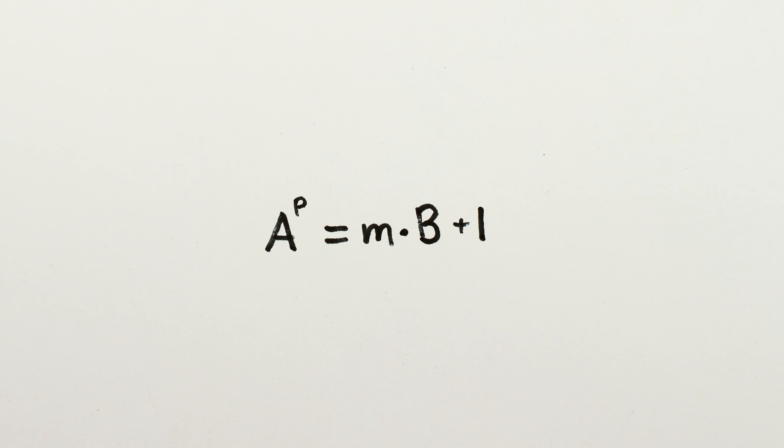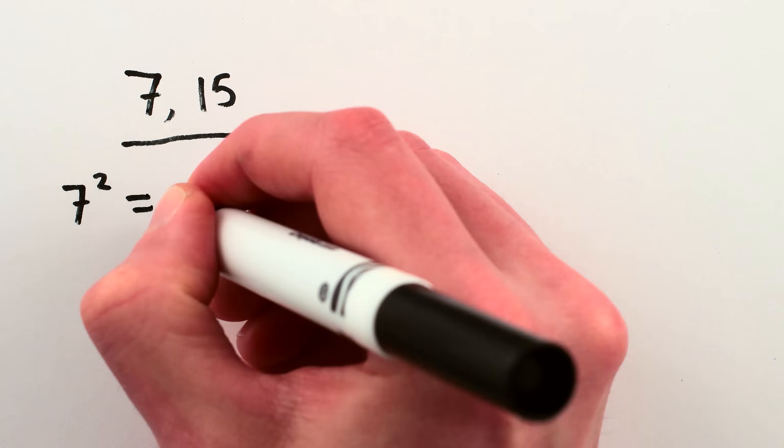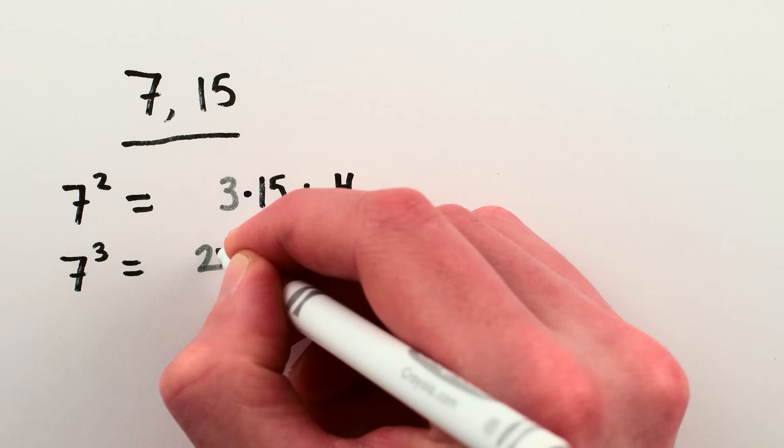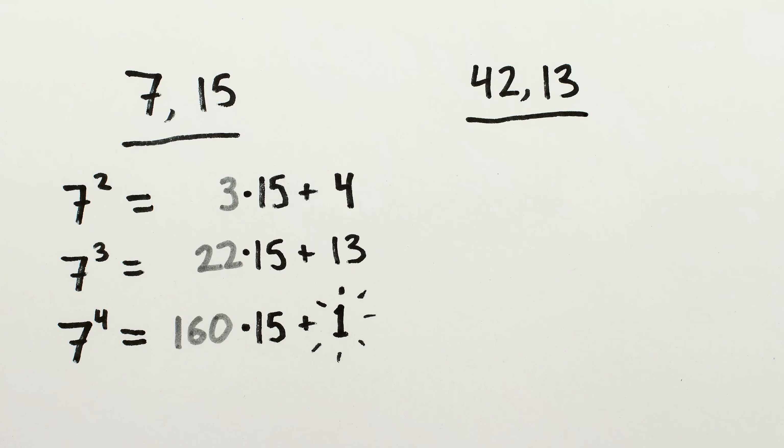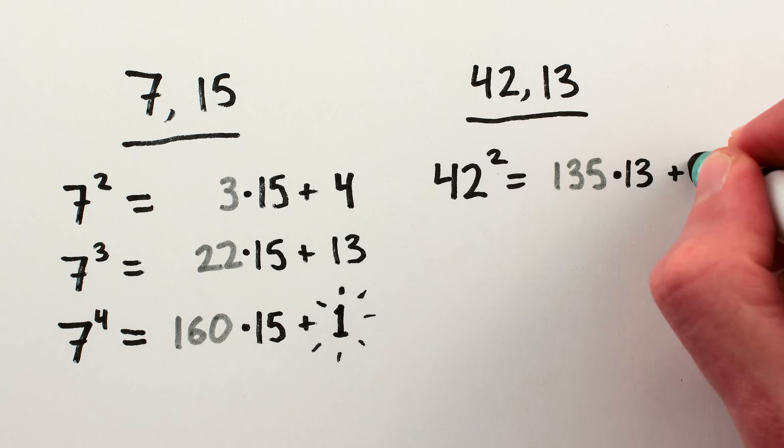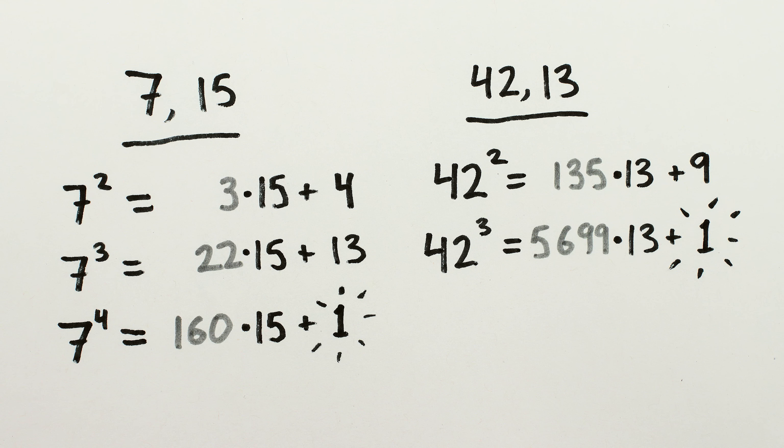Unfortunately, we don't have the time to get into why this is true, but hopefully a few illustrations can at least give you a feeling for it. For example, 7 and 15. While 7 squared isn't one more than a multiple of 15, and neither is 7 cubed, 7 to the 4th is. Or take 42 and 13. 42 squared isn't one more than a multiple of 13, but 42 cubed is. This same kind of thing works for any pair of numbers that don't share factors.